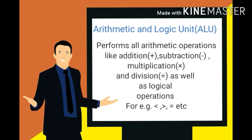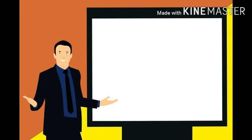ALU का काम है कि कोई भी mathematical operation — किसी number को add करना, subtract करना, multiply करना, divide करना — यानी कोई भी calculation वाला arithmetical work ALU perform करती है। और logical operations भी — जैसे दो numbers में कौन बड़ा है, कौन छोटा है, या कौन equal to है — ऐसे logical operations को भी ALU perform करती है और आपको result provide करती है।